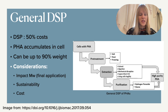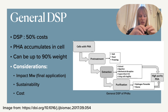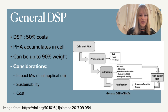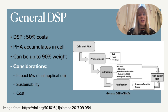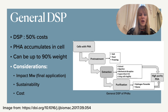You have these cells and you need to get the PHA out of them first. There can be a pre-treatment step to increase the porosity of the cells, followed by some type of extraction process. Then purification steps are needed to achieve the required high purity. An important consideration throughout is the final molecular weight, since the polymer can be damaged during processing, and molecular weight is critical for mechanical and other properties.